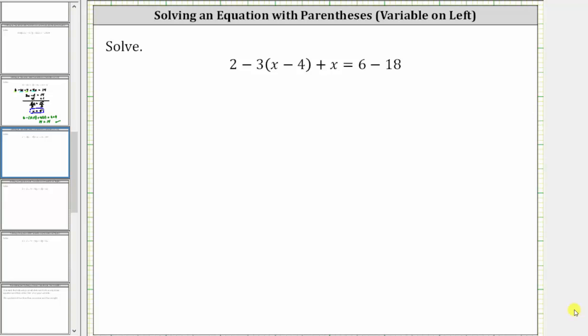To solve the equation, we want to determine the value of x that satisfies the equation or makes the equation true. In order to solve, we need to isolate the variable on one side of the equation, which means for the first step, we need to simplify both sides of the equation.